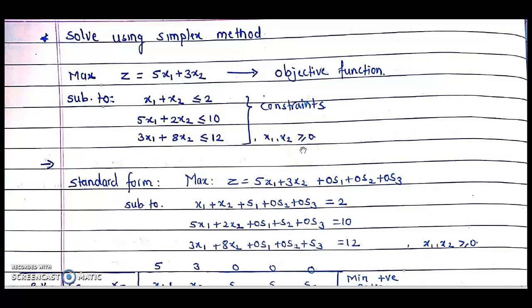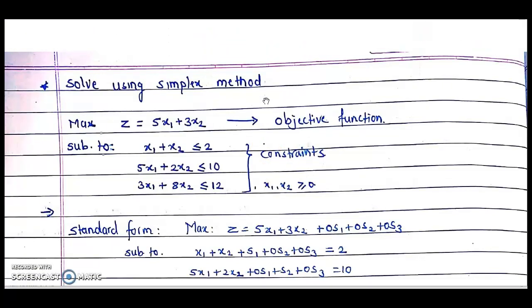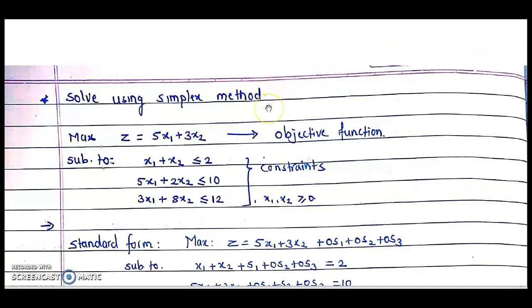Welcome everyone. Today we are going to cover the topic Simplex Method. In today's lecture we will be solving two examples of maximization type. The example is: solve using simplex method the following linear programming problem (LPP). Maximize z = 5x1 + 3x2. This equation is called the objective function, which is to be maximized or optimized. Subject to constraints: x1 + x2 ≤ 2, 5x1 + 2x2 ≤ 10, 3x1 + 8x2 ≤ 12, where x1 and x2 are non-negative.